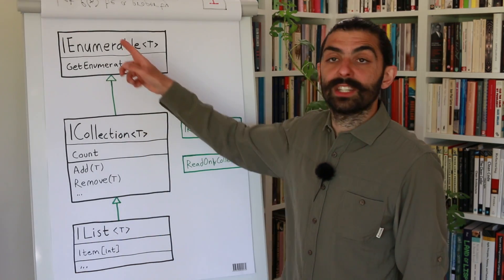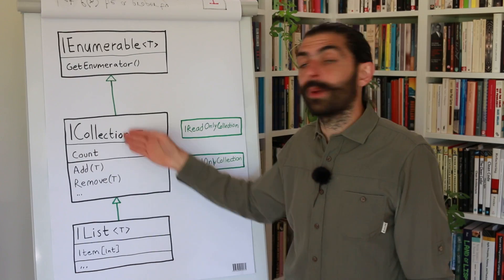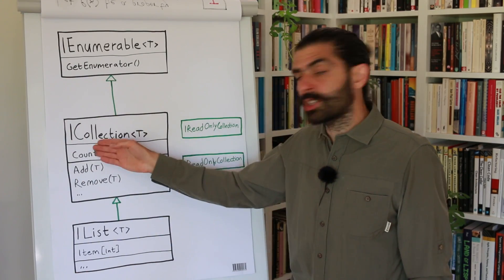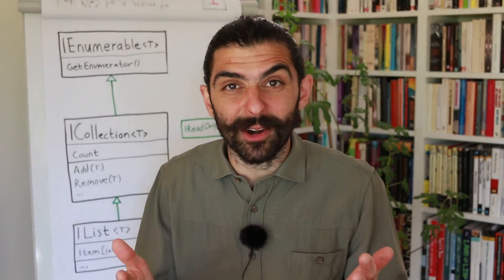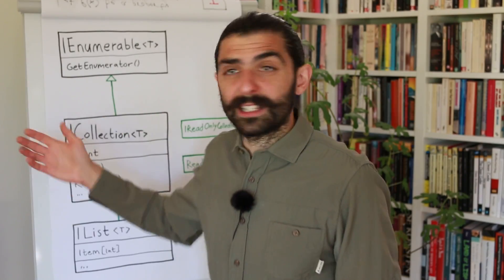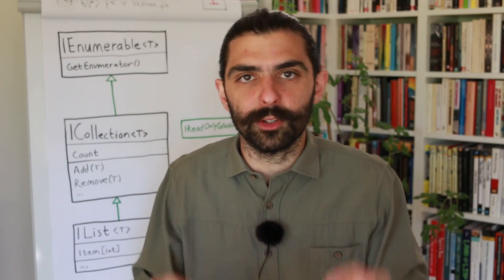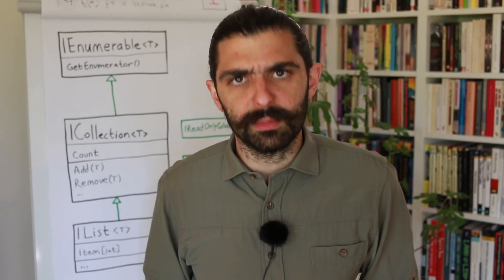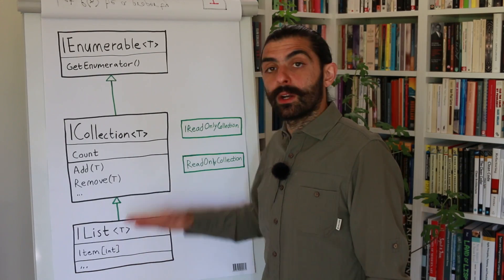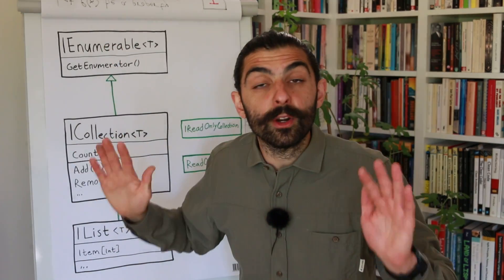So an IList is an ICollection which is an IEnumerable. Anything that an IEnumerable can do can also be done by an ICollection, and anything that can be done by an ICollection can also be done by an IList. There's more nuance especially related to the non-generic versions of these types, but we're focusing on the big picture because those details don't matter for understanding this particular violation of the Liskov Substitution Principle. A list is a collection which is an enumerable — so far so good.